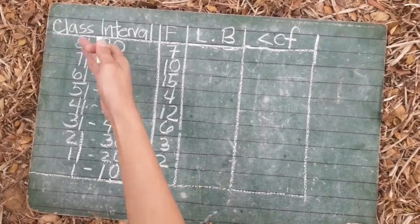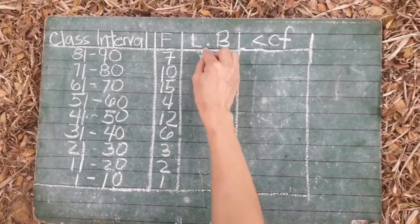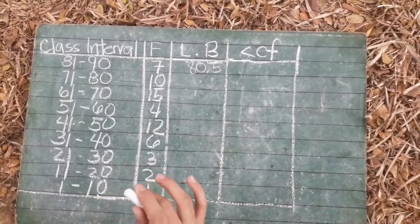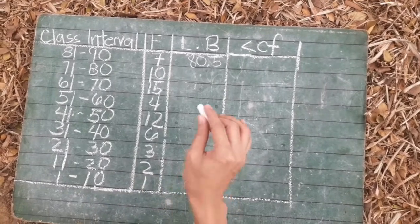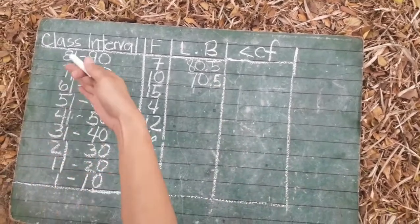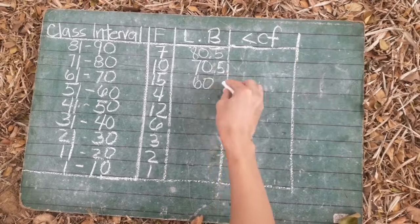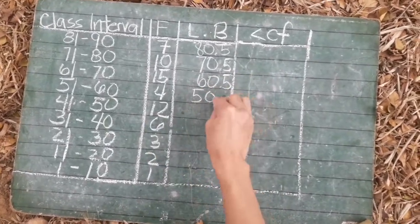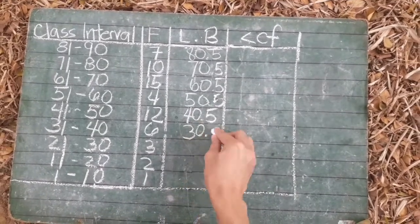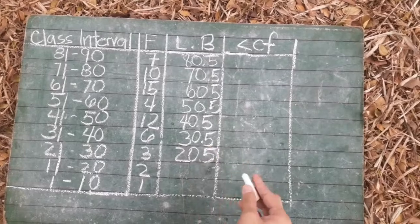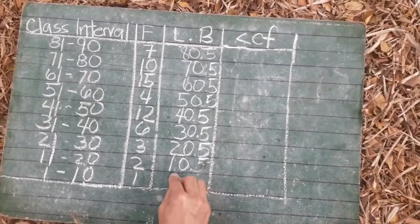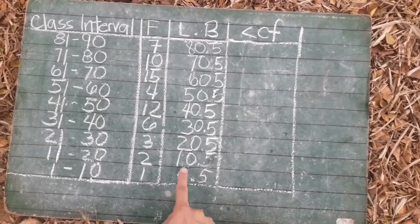So I'll teach you how. 81 minus 0.5 is 80.5. 71 minus 0.5 is 70.5. 61 — and do it all for the rest. 60 minus 0.5 is 60.5, 51 gives 50.5, 41 gives 40.5, 31 gives 30.5, 21 gives 20.5, 11 gives 10.5, and 1 minus 0.5 is of course 0.5.